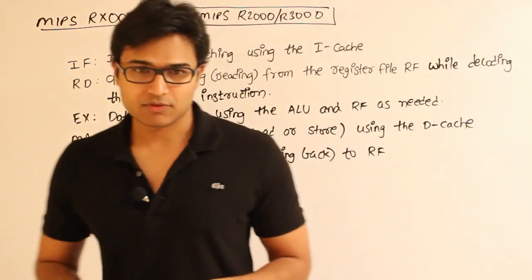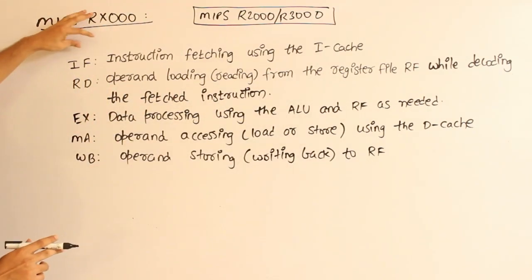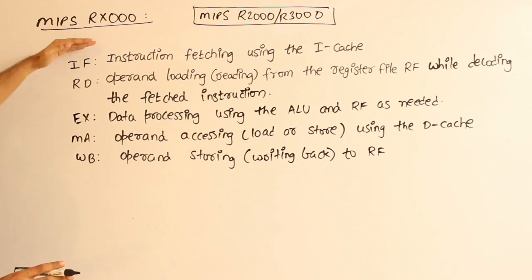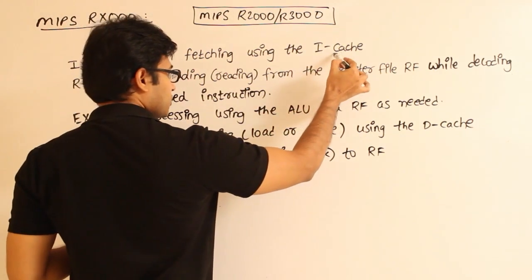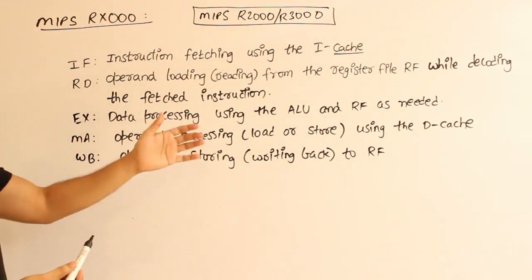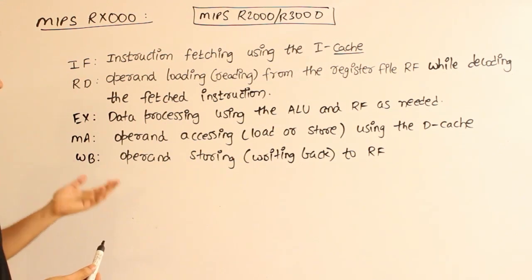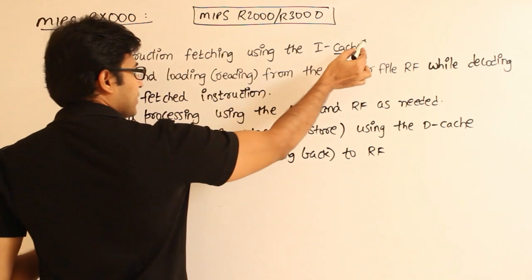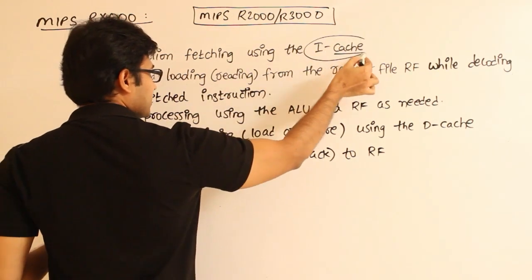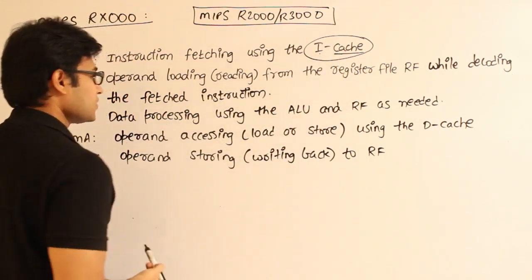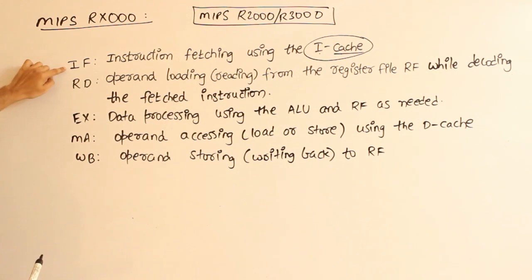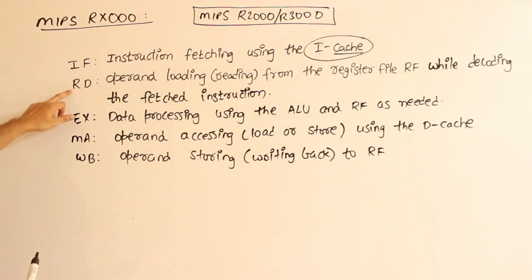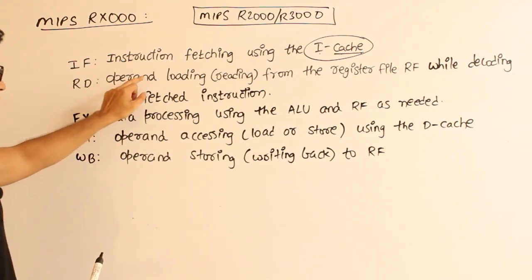The first phase is instruction fetch. Here we fetch instructions from memory — specifically from the cache, since before program execution begins, the program is loaded into cache and the CPU accesses it from there. The cache is divided into two parts: D-cache (data cache) and I-cache (instruction cache). In the instruction fetch phase, only the I-cache is accessed. The next phase is RD, which is mainly responsible for operand loading.